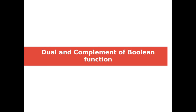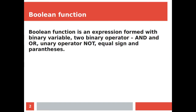A boolean function is an expression formed with binary variables, binary operators AND and OR, unary operator NOT, equal sign, and parentheses. A binary variable is just like a variable but it takes only two values: either 0 or 1.